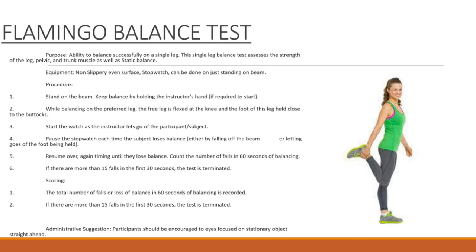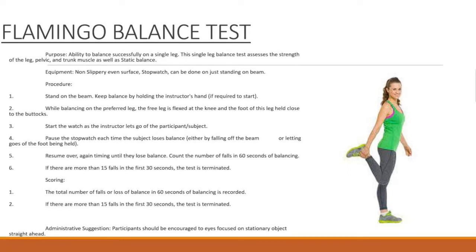Procedure: 1. Stand on the beam; keep balance by holding the instructor's hand if required to start. 2. While balancing on the preferred leg, the free leg is flexed at the knee and the foot of this leg held close to the buttocks. 3. Start the watch as the instructor lets go of the participant. 4. Pause the stopwatch each time the subject loses balance, either by falling off the beam or letting go of the foot being held. 5. Resume timing until they lose balance again. Count the number of falls in 60 seconds of balancing. 6. If there are more than 15 falls in the first 30 seconds, the test is terminated.